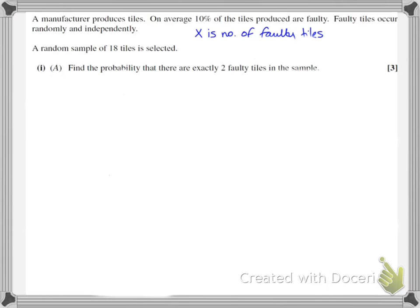Because it's the number of faulty tiles that we're interested in, that's the thing I'll call x. And x has a binomial distribution with n = 18 and the probability of being faulty — which is what we're interested in — is 0.1, as 10% is 0.1. I like to note that my p value is 0.1, and also my q value, which is 1 minus 0.1, so q is 0.9.